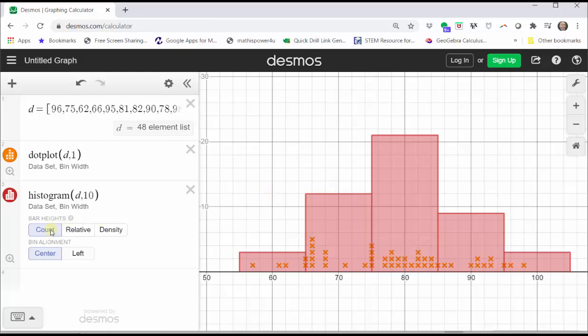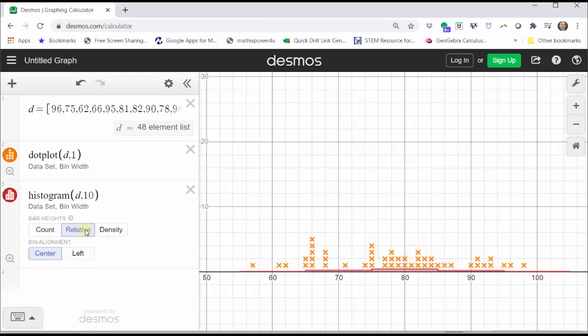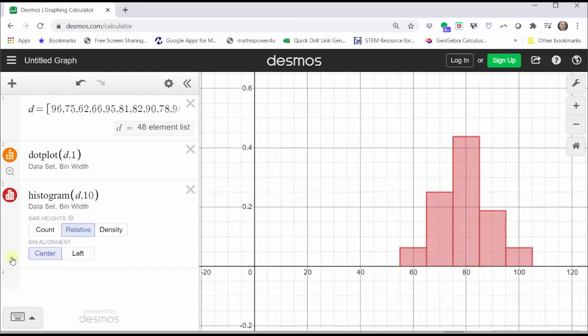Right now the bar height is on count, which means the height of each bar represents the number of test scores in the interval. If we click on relative and then click zoom fit, the sum of the heights of the bars is equal to one, or 100%.